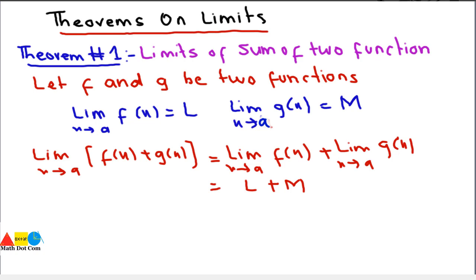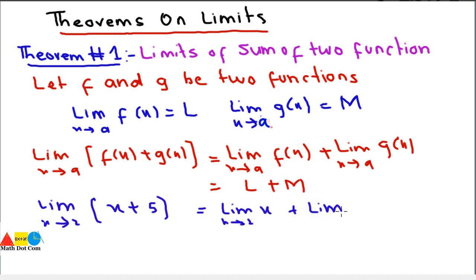That equals l + m, since the limit as x→a of f(x) is l and the limit as x→a of g(x) is m. The purpose is to apply the limit on each function separately. For example, limit as x→2 of (x + 5) equals the limit as x→2 of x, plus the limit as x→2 of 5. As x approaches 2, x becomes 2, and the constant 5 remains as is, giving the answer. This is theorem number one for the limit of a sum of two functions.